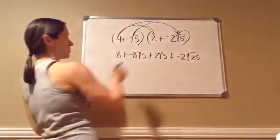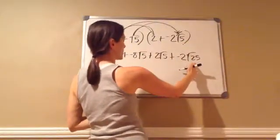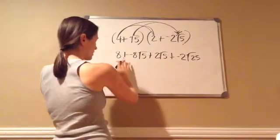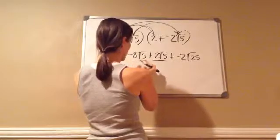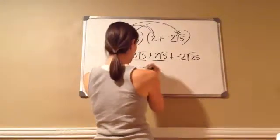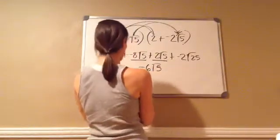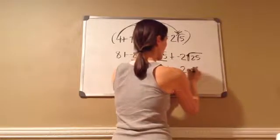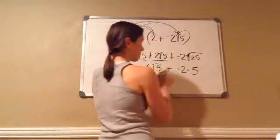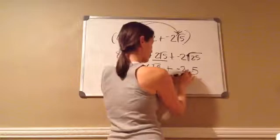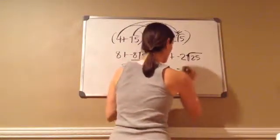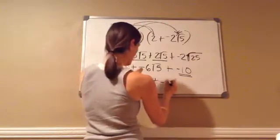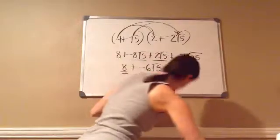All I did is multiply the square root of 5 times the square root of 5, which gives the square root of 25, and then this negative 2 stays there. Now I'm going to see if there's anything I can do. Negative 8 square root of 5 plus 2 square root of 5 is going to be negative 6 square root of 5. I'm going to bring down my 8, and then the square root of 25 is 5, so negative 2 times 5 is negative 10. Adding like terms gives us 8 plus negative 10, which is negative 2, plus negative 6 square root of 5.